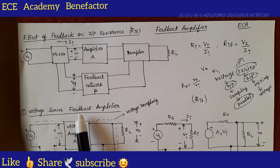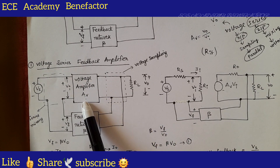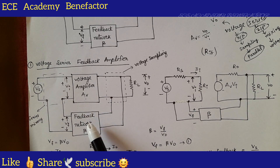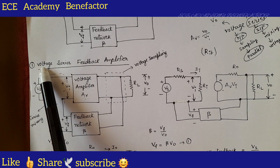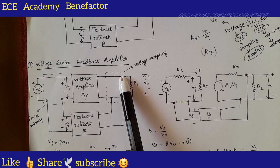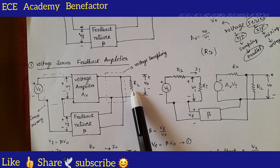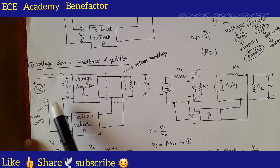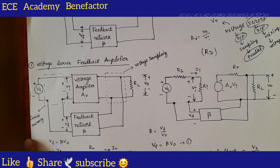So for a voltage series feedback amplifier, you need to take a voltage amplifier of gain A V and a feedback network of ratio beta. At the output side, voltage sampling is done — voltage sampling means parallel connection. So the feedback network is connected in shunt at the output side. R L is the load resistor. At the input side, series mixing is done, so the feedback network is connected in series with the input side of the amplifier.